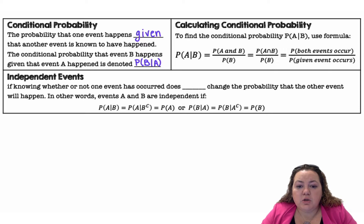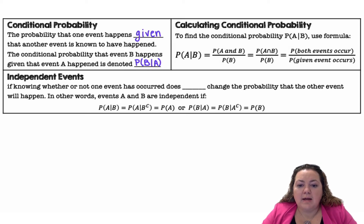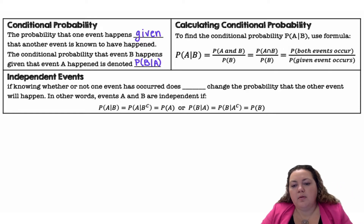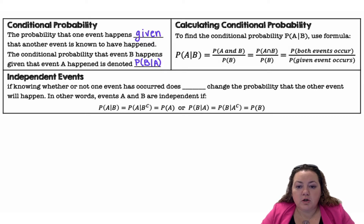To find the conditional probability of A given B, we use this formula: the probability of A and B divided by the probability of B. Remember, the AND is that intersection symbol, so it's the probability of both events occurring divided by the probability that the given event occurs.